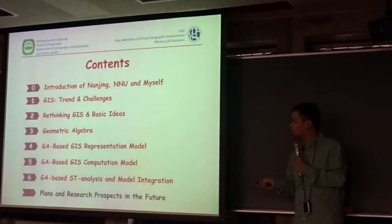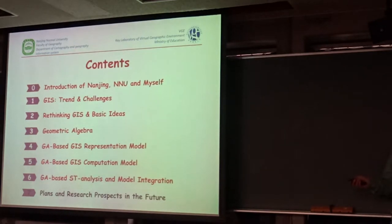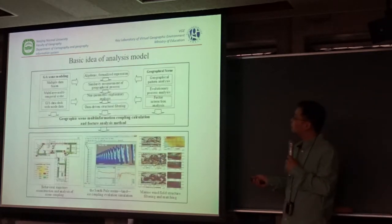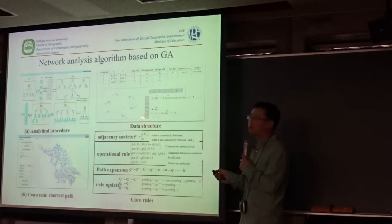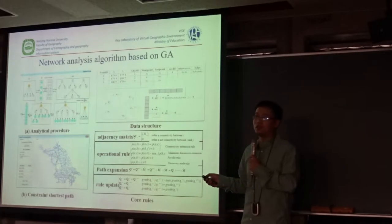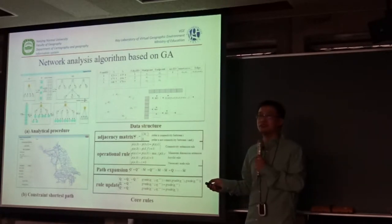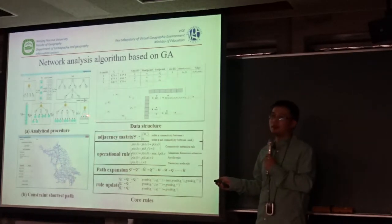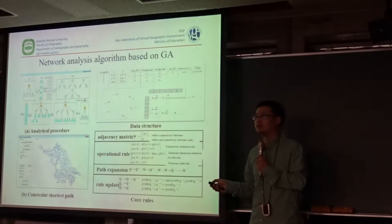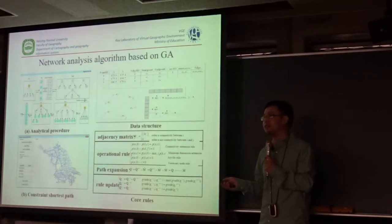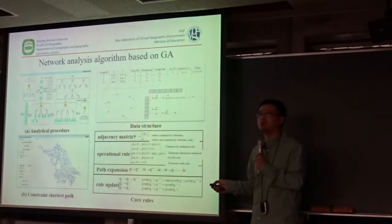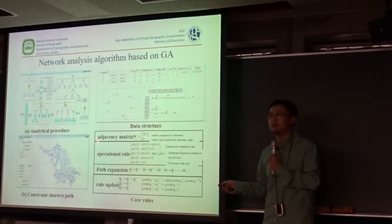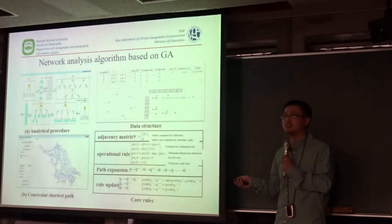The third component is the GA-based analysis models. We will show a typical example: we can encode the nodes of the networks as algebra basis, and then the edges of the network can be represented as bi-vectors with modified GA operators. All the paths we hope to generate in the network can be expressed as algebraic elements.